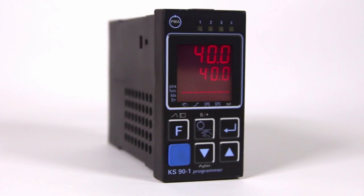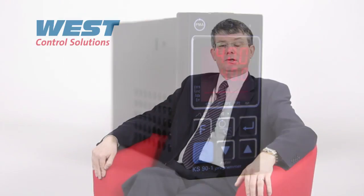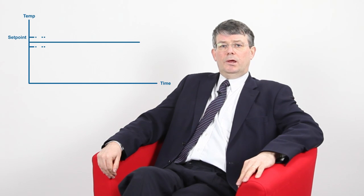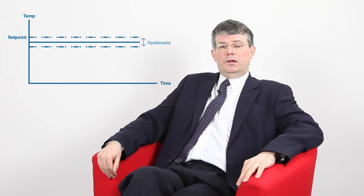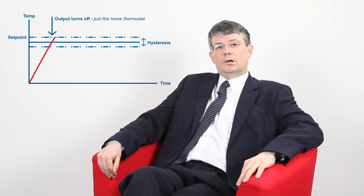An on-off controller, or signaler as they're sometimes called, will set its output so that it increases the process whenever it is below the set point. It then changes its output to decrease the process if it rises above the set point. In a typical heating application, something called reverse action is used. In this way, the heating output is turned on when it is below the set point and it is turned off when it is above.